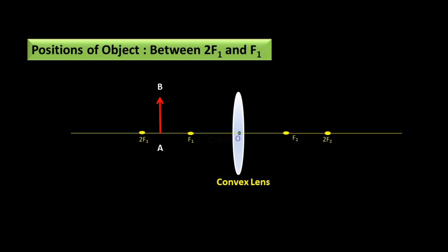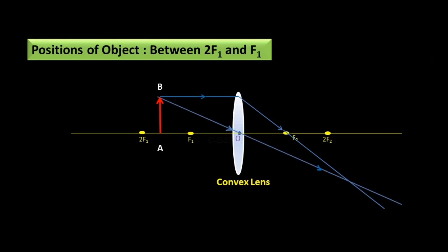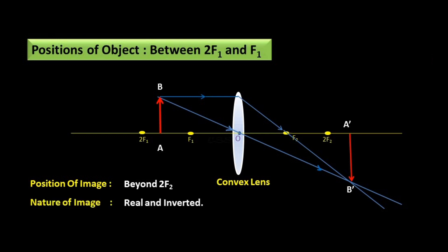Object between 2F1 and F1: AB is the object. The incident ray parallel to the principal axis passes through focus F2 as per rule. Another incident ray passes through the optical center without deviation. The image A'B' forms beyond 2F2. Position of image: beyond 2F2. Nature: real and inverted. Size of image: magnified.